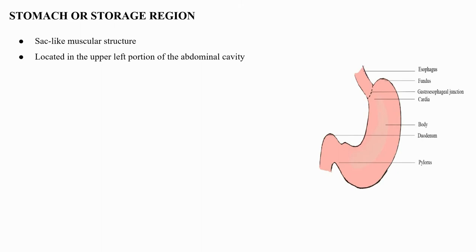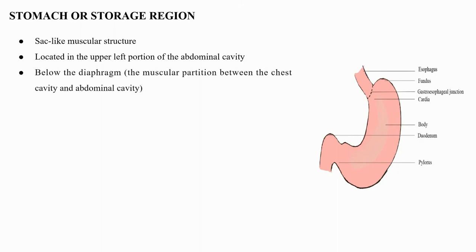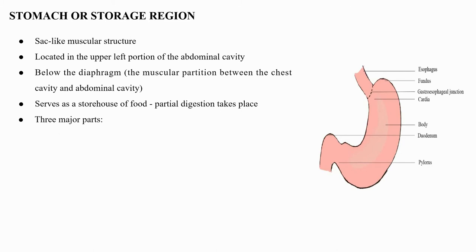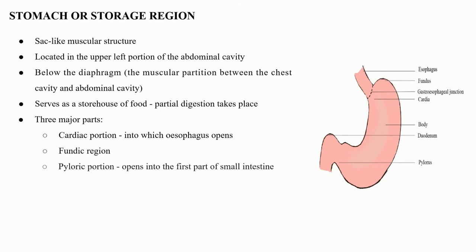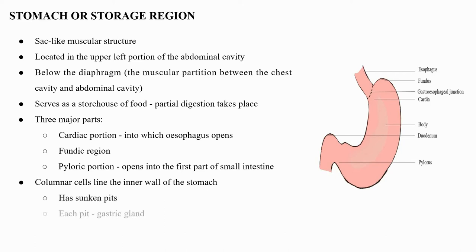The stomach is a sac-like muscular structure located in the upper left portion of the abdominal cavity below the diaphragm. It serves as a storehouse of food where partial digestion takes place. It has three major parts: a cardiac portion into which the esophagus opens, a fundic region, and a pyloric portion which opens into the first part of the small intestine. Columnar cells line the inner wall of the stomach and have sunken pits, each consisting of a gastric gland.